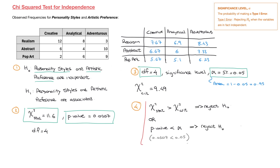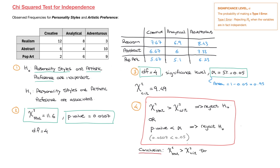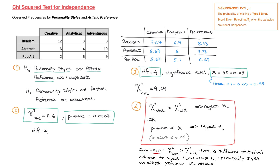To conclude formally: since the chi-squared statistic is greater than the critical chi-squared value, there is therefore sufficient statistical evidence to reject the null hypothesis and accept the alternative hypothesis. Personality styles and artistic preference are associated. I really hope that helped, and if it did, please hit like on this video, drop a comment down below, and subscribe to this channel to help get this video to as many students as possible.